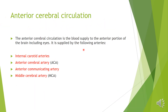The anterior circulation is the blood supply to the anterior portion of the brain including the eyes. It is supplied by the internal carotid artery, anterior cerebral artery, anterior communicating artery and the middle cerebral artery.